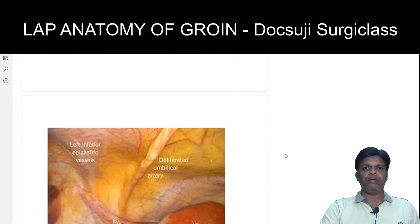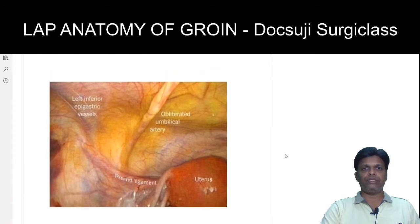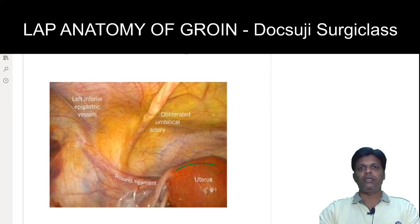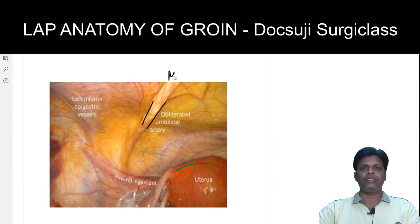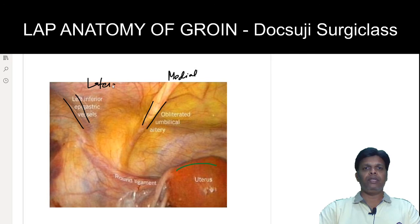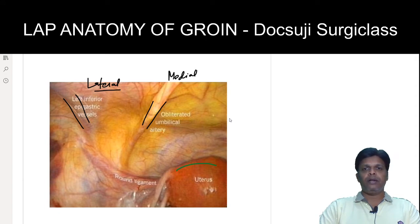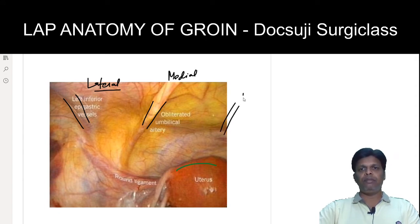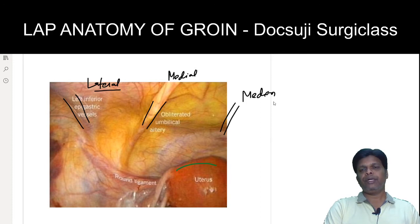Now you can see an intraoperative laparoscopic picture of a female patient where the uterus is visible. The structure you are seeing here is the obliterated umbilical artery, which is the medial umbilical ligament. You can also see the lateral umbilical fold or ligament where the inferior epigastric vessels are visible, and the median umbilical ligament is also present here.